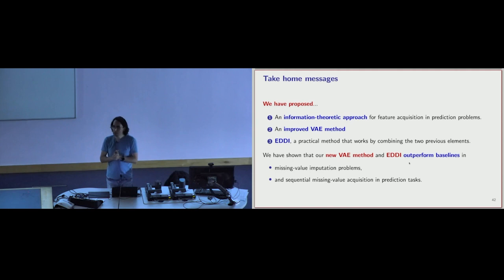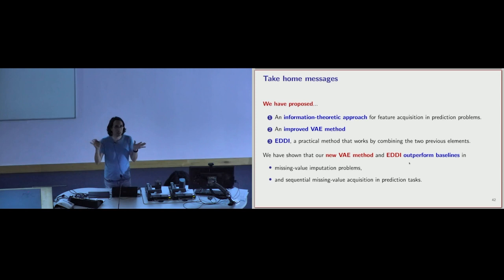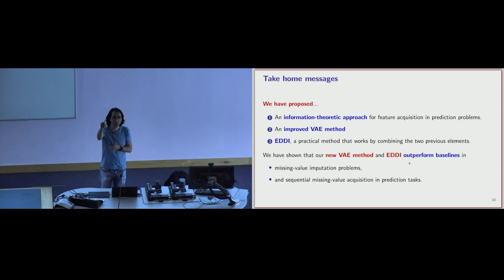Regarding the missing data assumption: we assume the data is missing at random and don't do anything special about how it is missing. There is work building on this that assumes data is not missing at random — you could have a missing data model that tells you when data will be missing or not, and you can combine it with this approach for better results.